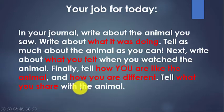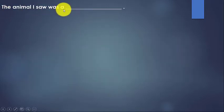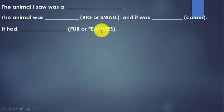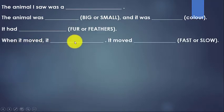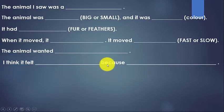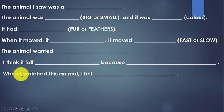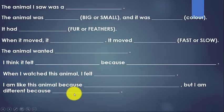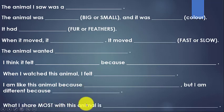Tell what you share with the animal. Use these sentence starters: 'The animal I saw was a ___. The animal was big or small and it was ___ color. It had fur or feathers. When it moved, it moved fast or slow. The animal wanted ___. I think it felt ___ because ___. When I watched this animal, I felt ___. I am like this animal because ___, but I am different because ___. What I share most with this animal is ___.